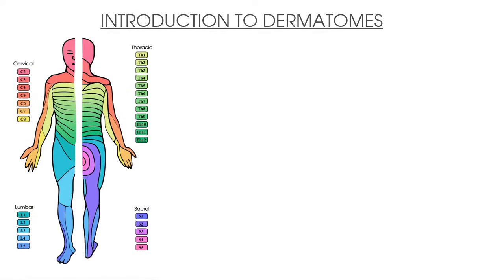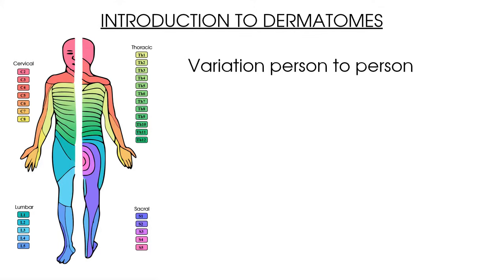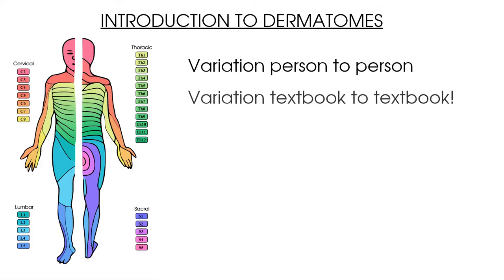What you will find in clinical practice is that there is a relative variation in dermatomal patterns, not only between one patient and another, but also between different textbooks, which will have different interpretations of where the dermatomes are. This is because researchers have used different methods of mapping dermatomal patterns over time. So it's a good idea to have an understanding of where the dermatomes are, but don't be surprised if the patient's sensory issues do not fit an exact replica of the dermatomes you study.